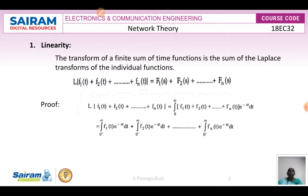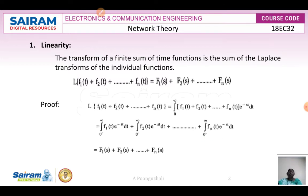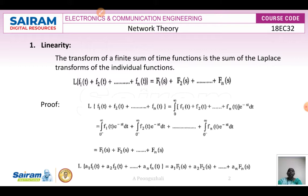Each of these integrals is recognized as F1(s), F2(s), and so on up to Fn(s). So the result equals F1(s) + F2(s) + ... + Fn(s). This is called the linearity property. Furthermore, if the time functions are multiplied by constants a1, a2, ..., an, then the Laplace transform of a1·f1(t) + a2·f2(t) + ... + an·fn(t) equals a1·F1(s) + a2·F2(s) + ... + an·Fn(s).